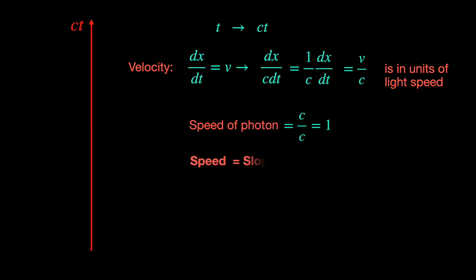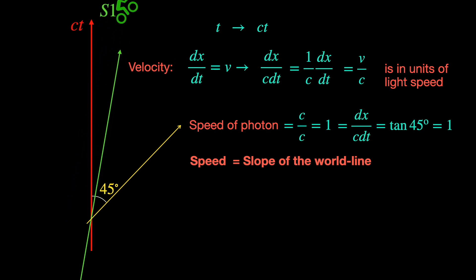Now, speed is given by the slope of the world line with the vertical time axis of the rest frame. Therefore, photon world line has to be a 45 degree straight line giving slope delta x by c delta t equals tan 45 equals 1. Any material object or observer moving uniformly relative to the rest frame s0 must have speeds less than that of a photon.